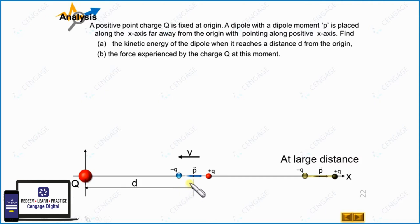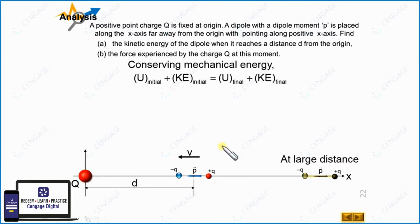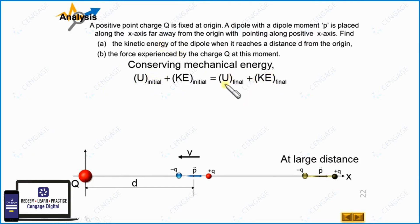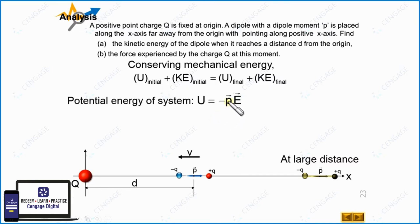As we know, mechanical energy will remain conserved. We apply conservation of mechanical energy: initial potential energy plus initial kinetic energy equals final potential energy plus final kinetic energy. At a large distance, the potential energy is zero and the initial kinetic energy is also zero. We need to calculate the final kinetic energy, and we can find the final potential energy of the dipole-and-charge-particle system, which is equal to minus p dot E.